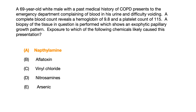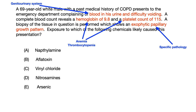Now let's look at the vignette and see what bits of information you should have paid close attention to if you wanted to get this question correct. The fact that the patient has blood in his urine and difficulty voiding tells you that there's some type of pathology going on in the genitourinary system.